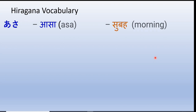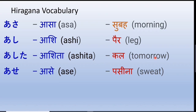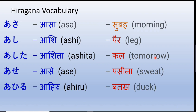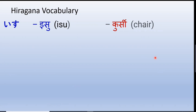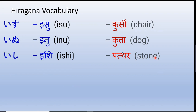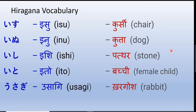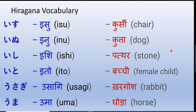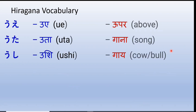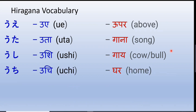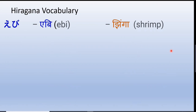Asa — morning. Ashi — leg. Ashita — tomorrow. Ase — sweat. Ahiru — duck. Ari — ant. Isu — chair. Inu — dog. Ishi — stone. Ito — thread. Usagi — rabbit. Uma — horse. Ue — above. Uta — song. Ushi — cow or bull.